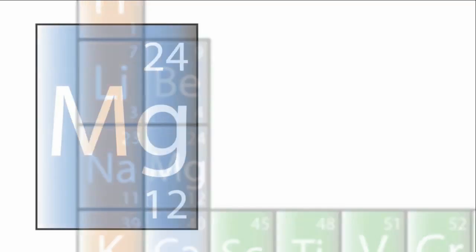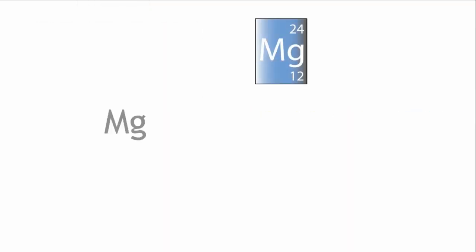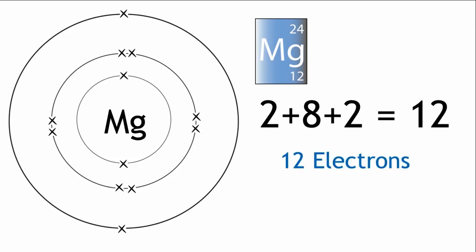Magnesium has twelve protons, therefore it has twelve electrons. The first two are placed in the first shell, the next eight are placed in the second shell, and the last two are placed in the third shell. Two plus eight plus two, twelve electrons. This would be written as Mg 2,8,2.